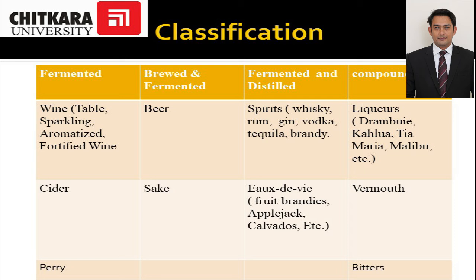To summarize, alcoholic beverages are classified as: fermented beverages; brewed and fermented beverages; fermented and distilled beverages; and fermented, distilled, and botanical-added beverages known as compounded beverages.